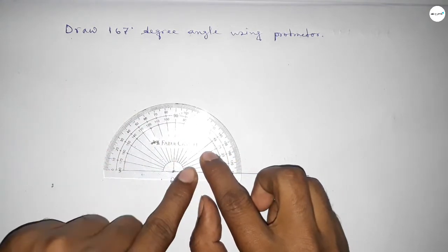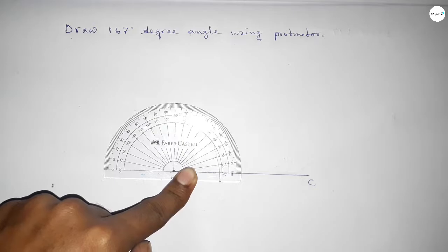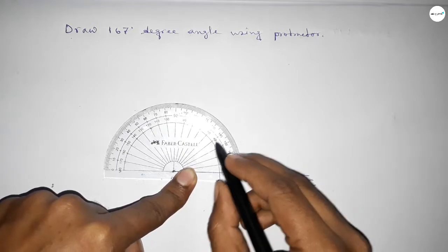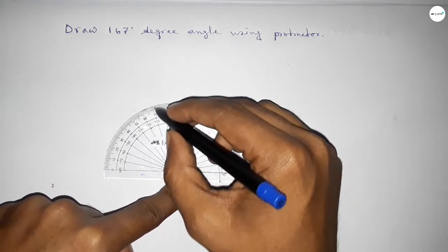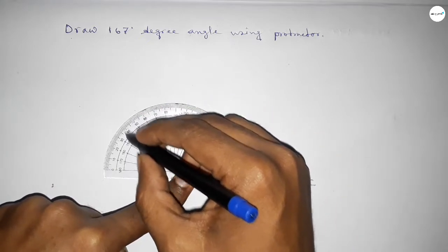So the starting angle: 0, 10, 20, 30, 40, 50, 60, 70, 80, 90, 100, 110, 120, 130, 140, 150.